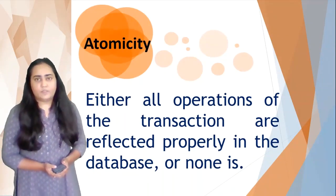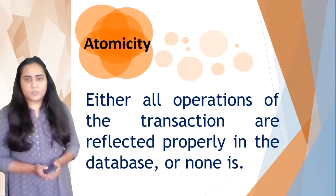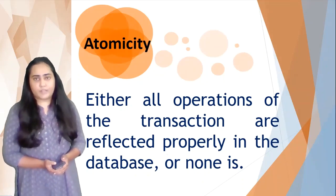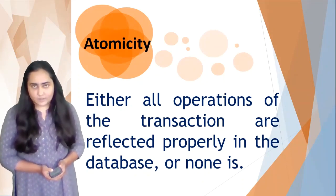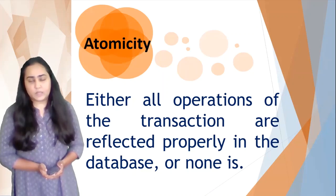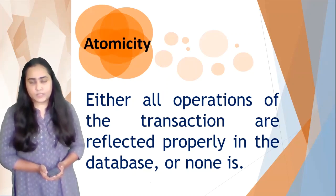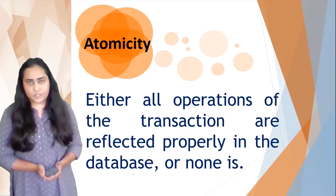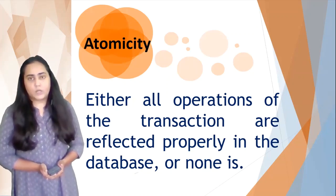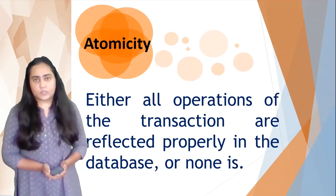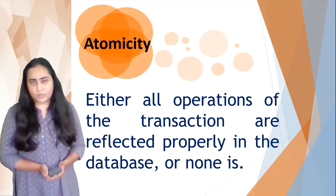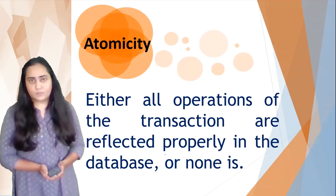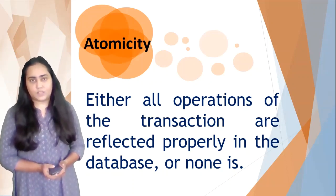Atomicity means that either all operations of the transaction are reflected properly in the database, or none are. This means a transaction must be either fully executed or not executed at all — it should not be left somewhere in between, because a partial execution will cause problems, as I'll show you with an example.